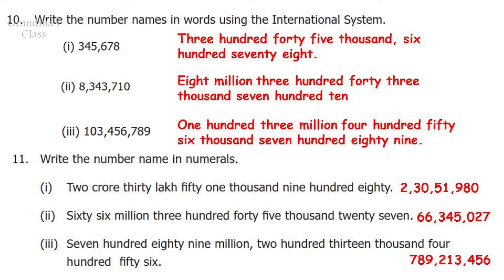Question 11: Write the number name in numerals. You are given the name and you have to write the numbers. The first one reads 2 crores, 30 lakh, 51,980, which can be written in number form as 2,30,51,980. Second one: 66,345,027 — this name is in the international system, so you have to write 66,345,027.